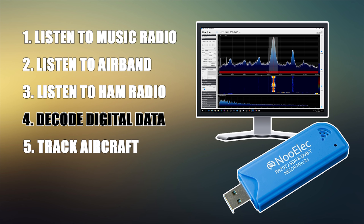Next on the list is decoding digital data. The last feature — listening to ham radio — was technically decoding digital data to audio. What this particularly means now is we're going to be decoding digital data to text. The first thing we're going to be looking at is something called POCSAG — P-O-C-S-A-G — which stands for Post Office Code Standardization Advisory Group, otherwise known as pagers.